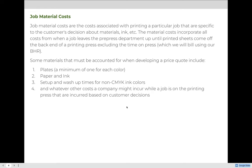Job material costs vary from customer to customer, industry to industry, and cost center to cost center. Even within a printing company, the material costs for each cost center will be different. Job material costs are the costs associated with printing a particular job that are specific to the customer's decisions about materials, ink, and more. The material costs incorporate all costs from when a job leaves the pre-press department up until printed sheets come off the back end of a printing press, excluding the time it takes to print the job, since we bill time based on the BHR.